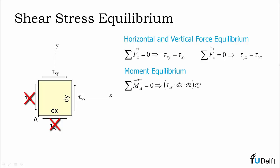So if we look at tau xy at the top surface, it acts on area dx times dz and has a moment arm dy. This has to be equal to shear stress tau yx acting on the right of the element on area dy times dz, multiplied by moment arm dx.